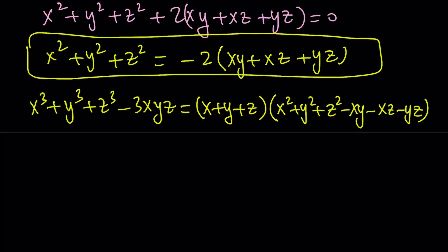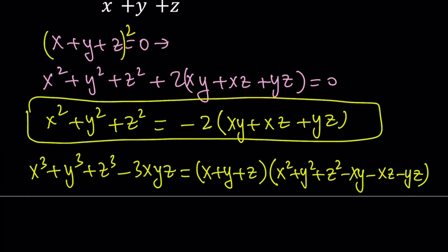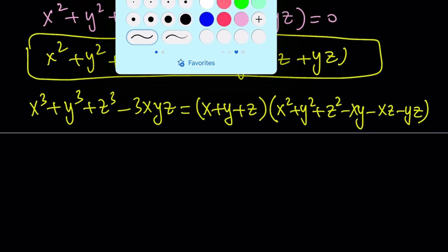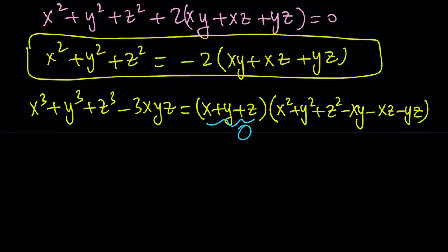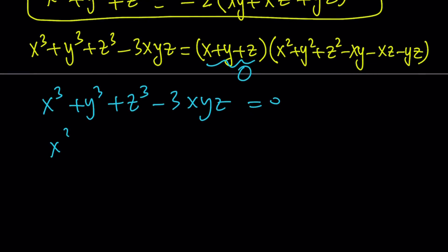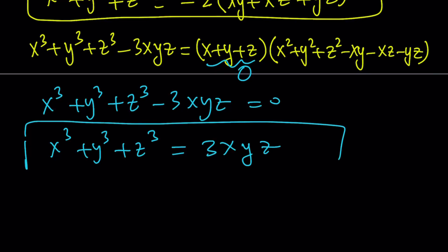We know that x plus y plus z is equal to 0 — that was given. So we can set that factor equal to 0, which gives us x cubed plus y cubed plus z cubed minus 3xyz equals 0. This implies that the sum of cubes can be written as 3xyz. We're going to save that result as well.